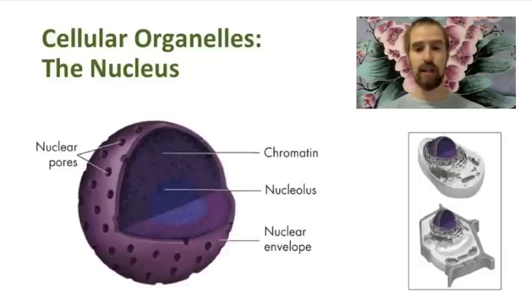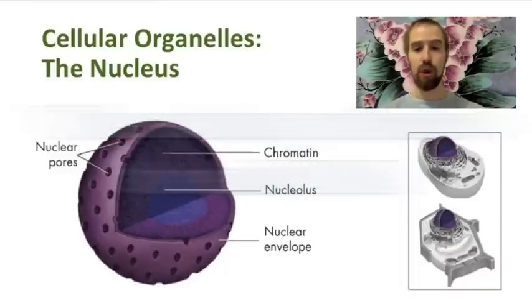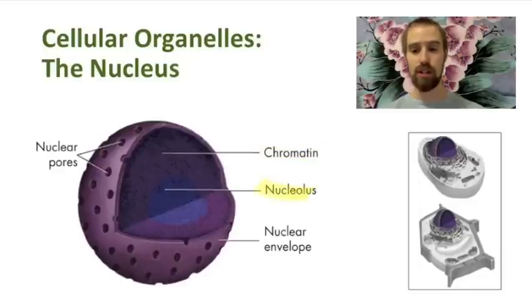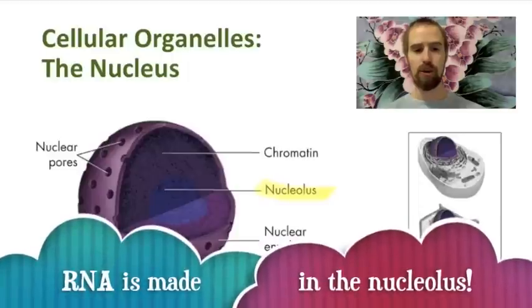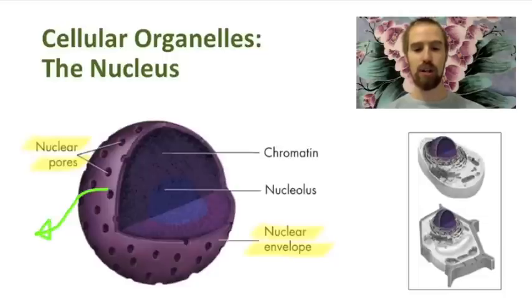Unlike prokaryotic organisms like bacteria, eukaryotic cells contain a nucleus that houses and protects the cell's genetic material. That's the stuff labeled chromatin in this figure, and chromatin is a mix of DNA and proteins. In the center of the nucleus is a dense region called the nucleolus, and this is where other important nucleic acids called RNA is synthesized. Like the cell itself, the nucleus is surrounded by a membrane of its own called the nuclear envelope. This nuclear envelope is full of holes called pores, and RNA is able to exit the nucleus through these pores. DNA, however, resides only in the nucleus and is only ever free-floating during cell division.